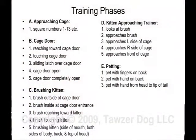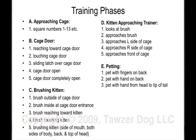We also have different training phases that we're looking at. Of those different conditions — being able to approach the cage, being able to open the cage door — we're breaking those down even smaller, because this is shaping. What shaping is, is taking the big behavior you want and breaking it down into more manageable, smaller behaviors.